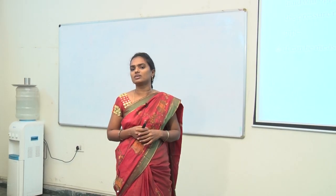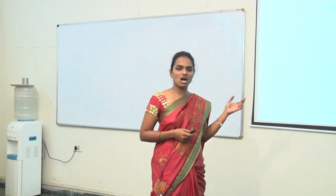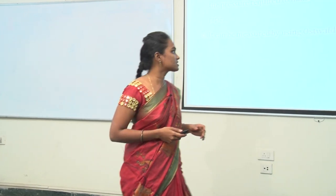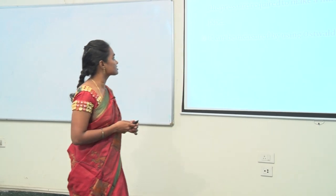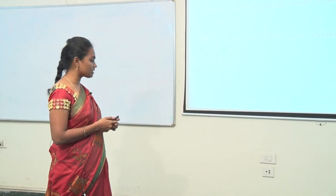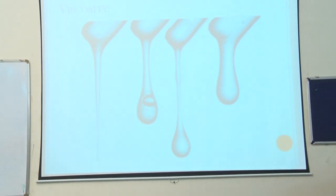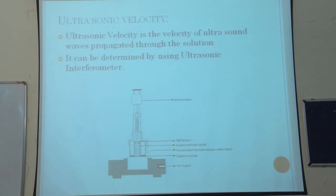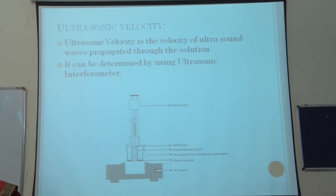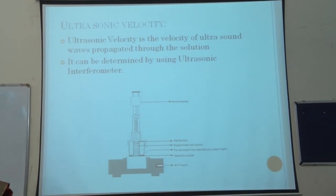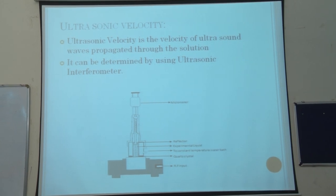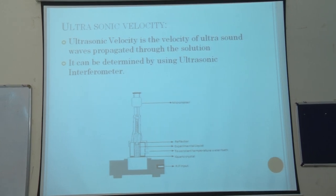Viscosity is also determined by using an Ostwald viscometer, or some digital instruments are also available. Next, ultrasonic velocity — the velocity of ultrasound waves. This is also determined by using an ultrasonic interferometer.